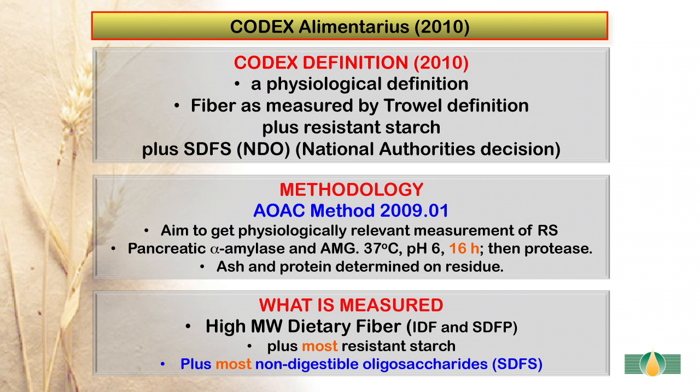The methodology employed is AOAC method 2009.01, which was the Megazyme Integrated Total Dietary Fibre procedure. With this, the aim was to get a physiologically relevant measurement of resistant starch using pancreatic alpha-amylase and amyloglucosidase at 37 degrees centigrade, pH 6, but the incubation is for 16 hours. Following this, protease treatment was included. Then ash and protein are determined on the residues and subtracted.